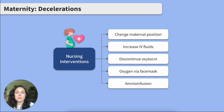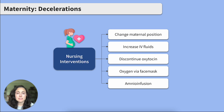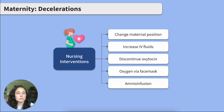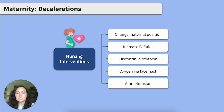Let's talk about interventions for maximizing blood flow from the client to the fetus. Changing maternal position — we'll want to change to a lateral position that aids in improving blood flow to the fetus. Increasing IV fluids — the client may have IV fluids during active labor; use those to draw a bolus if needed. If no IV fluids are running, maintain IV access and keep fluids in the room just in case. Discontinuing oxytocin — if the fetal heart rate shows any signs of fetal distress, discontinue the infusion and notify the provider.